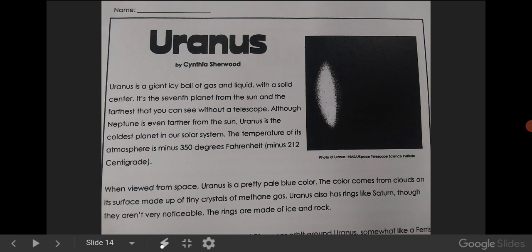Uranus. Uranus is a giant icy ball of gas and liquid with a solid center. It's the seventh planet from the Sun and the furthest that you can see without a telescope. Although Neptune is even further from the Sun, Uranus is the coldest planet in our solar system. The temperature of its atmosphere is minus 350 degrees Fahrenheit, or minus 212 centigrade.